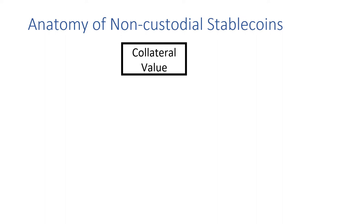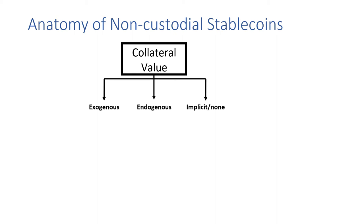Let's dig into the anatomy of a non-custodial stablecoin a little deeper. There are more functions than we've laid out so far, and a stablecoin recipe can be thought of as any combination of these basic ingredients. One that we've already connected with is the primary value or collateral value backing the system, which includes the exogenous, endogenous, and implicit collateral types.